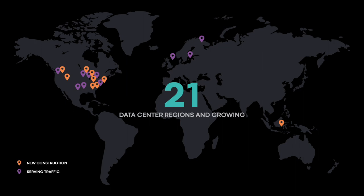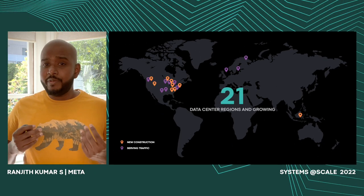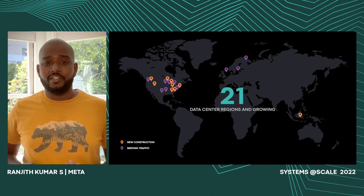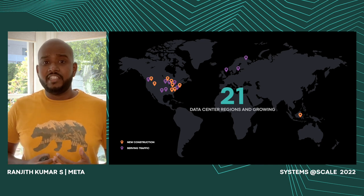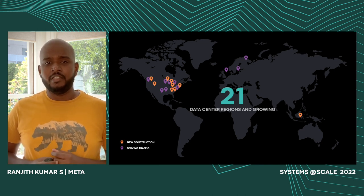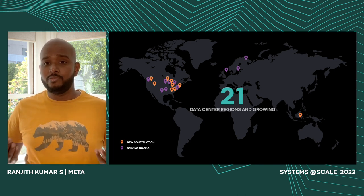Right now, we have 21 data centers, and over the next coming years, we'll continue to grow. At this scale, the complexity and toil from managing and operating capacity at a per-geographic region basis would become intolerable at a point in the journey. From an efficiency point of view, we might not be able to better leverage our hardware in the most optimized way. These challenges enabled us to start thinking more globally.